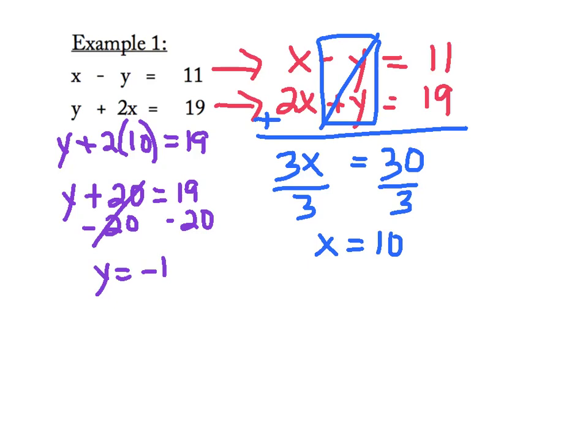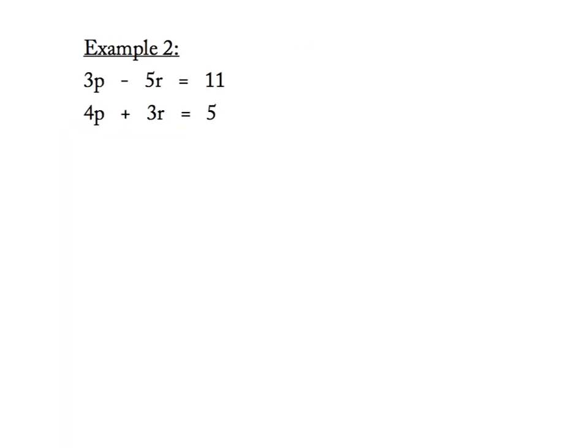I'm now going to take my solution and write that as an ordered pair. Remember, we want those to be in alphabetical order, so we'll have 10, negative 1. Don't forget, we can check our solution by substituting it into both of our equations to make sure that it checks out for both. All right, here we go with example 2.